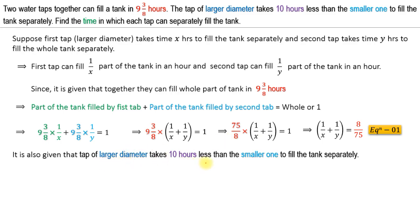It is also given that the tap of larger diameter takes 10 hours less than the smaller one to fill the tank separately. This implies Y − X = 10, and therefore Y = X + 10. Let us consider this as equation two.